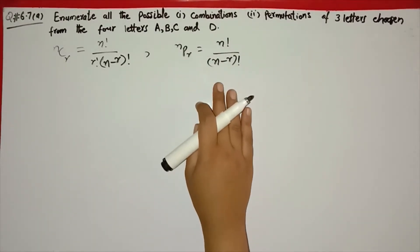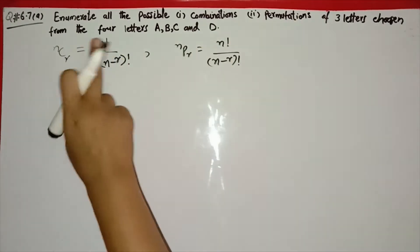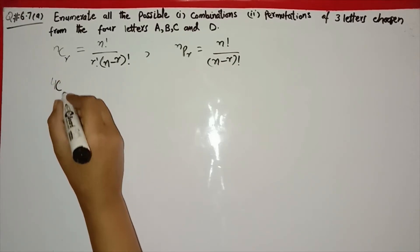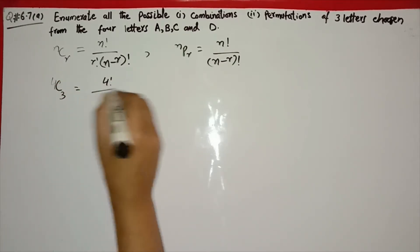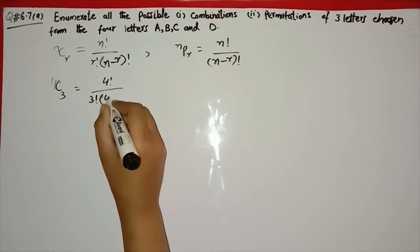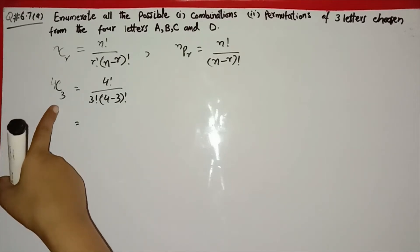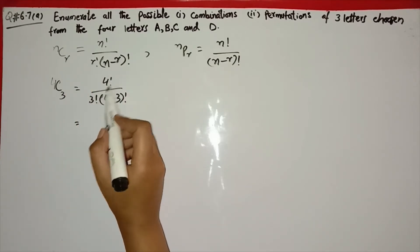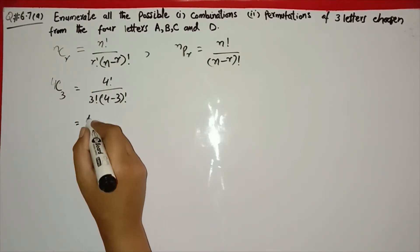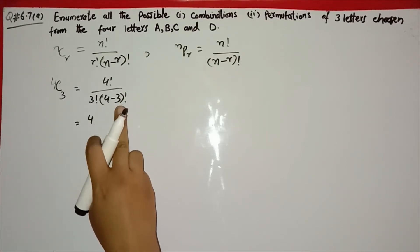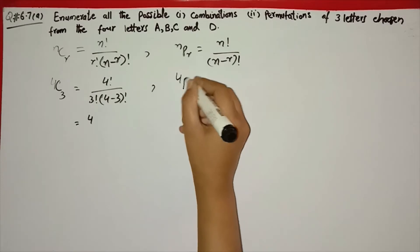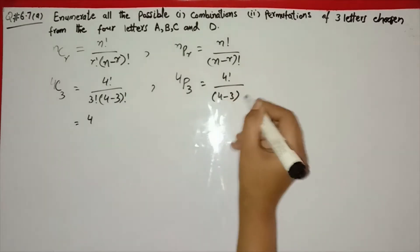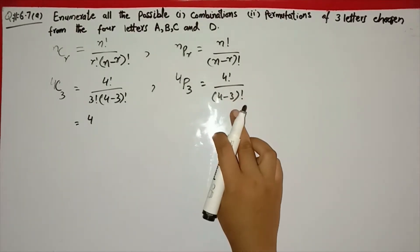For all possible combinations of three letters, r is equal to 3 and the total number of letters is n equal to 4. So we calculate 4C3: 4 factorial divided by 3 factorial into (4 minus 3) factorial, which gives 4 factorial over 3 factorial into 1 factorial.